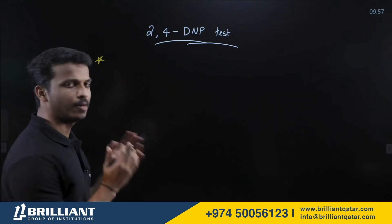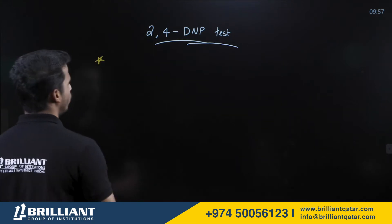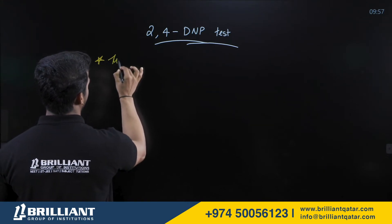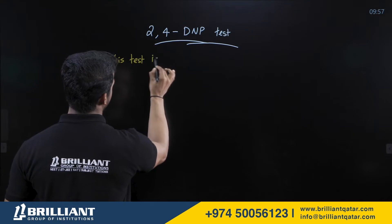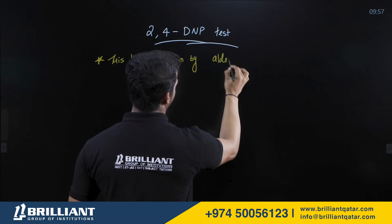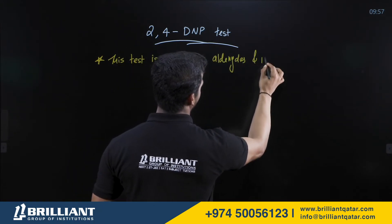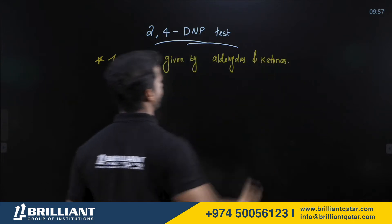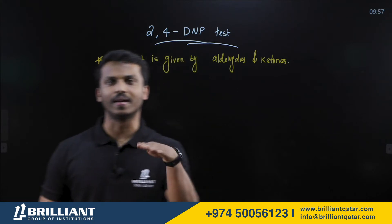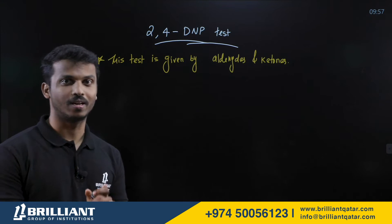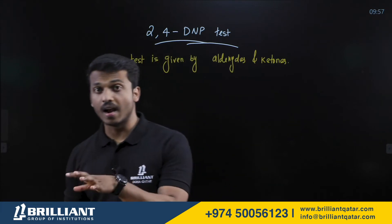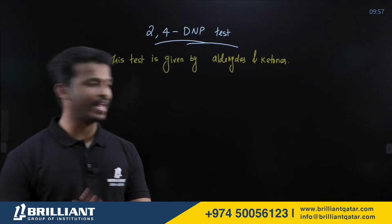The main purpose of the 2,4-DNP test is to distinguish compounds. This test is given by all aldehydes and ketones. For example, suppose I ask you: how can you distinguish ethanol from propanoic acid?